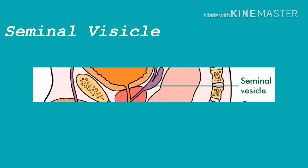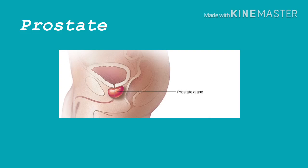The paired seminal vesicles are saccular glands posterior to the urinary bladder. Each gland has a short duct that joins with the ductus deferens at the ampulla to form an ejaculatory duct, which then empties into the urethra. The fluid from the seminal vesicles is viscous and contains fructose, which provides an energy source for the sperm; prostaglandins, which contribute to the motility and viability of the sperm; and proteins that cause slight coagulation reactions in the semen after ejaculation.